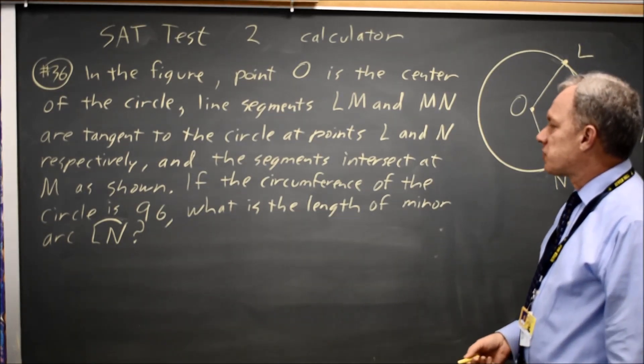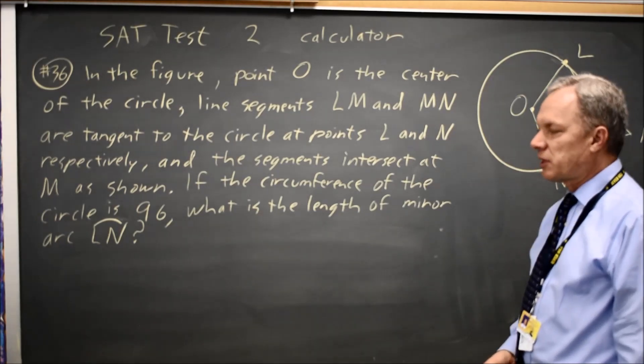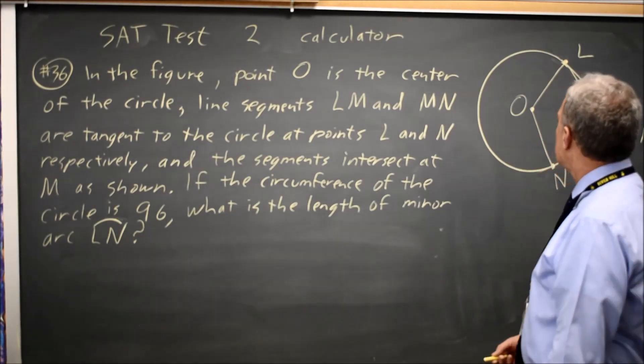And the question is, if the circumference of the entire circle is 96, what's the length of the minor arc LN? In this case,